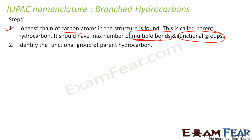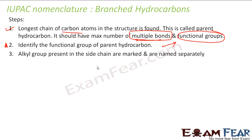Once you have done that, you identify the functional group of the parent hydrocarbon. In class 10th, you will get only one functional group, so you can ignore the case of multiple functional groups for now. But you should remember that this is something which exists. Then you find the alkyl groups separately — there will be side chains — and you have to mark them and name them separately.